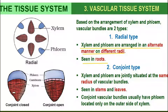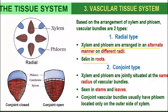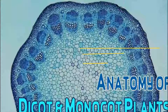In the conjoined closed type, cambium is absent, making it a closed conjoined vascular bundle. In the conjoined open type, cambium is present. So there are two types of vascular bundles based on the arrangement of xylem and phloem.